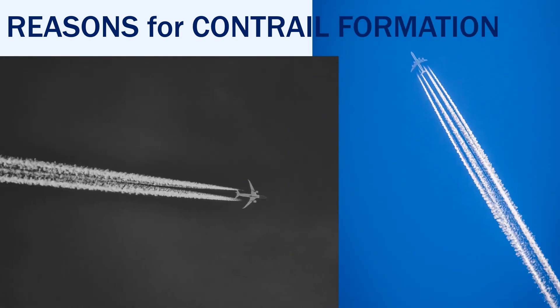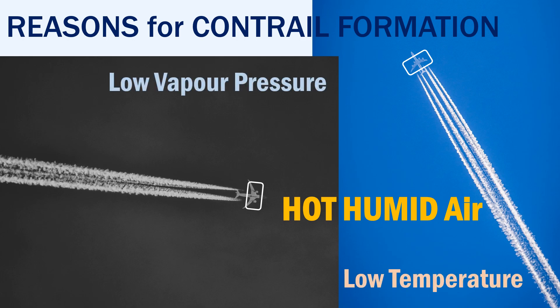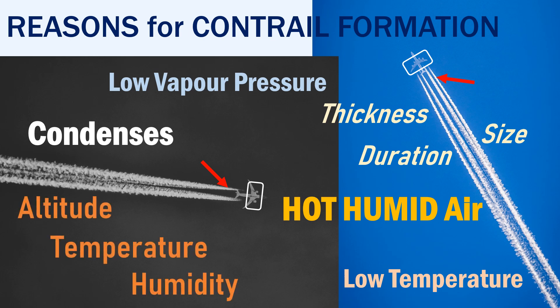Now let's look at the reasons for contrail formation. The contrails form naturally behind an aircraft. One reason for contrail formation is the mixing of hot, humid air from the engine exhaust with the outside air, which has low vapor pressure and low temperature. The hot, humid air immediately condenses because of the outside air conditions and freezes, causing a white trail behind the aircraft. The size, thickness, and duration of the contrail depend on the aircraft's altitude, temperature, and humidity of the atmosphere.